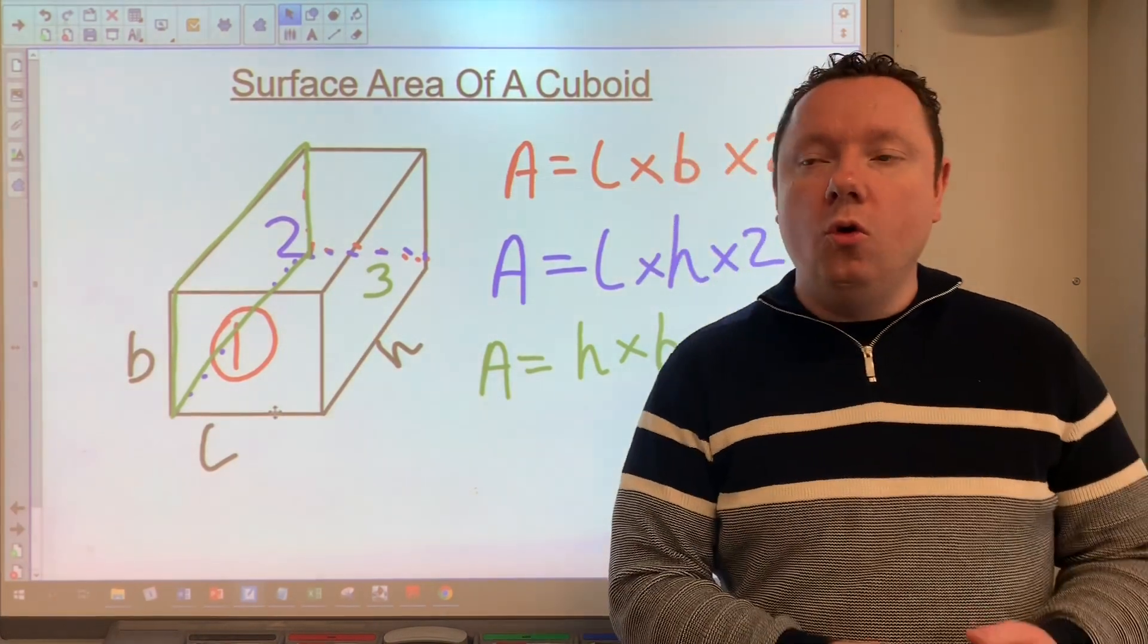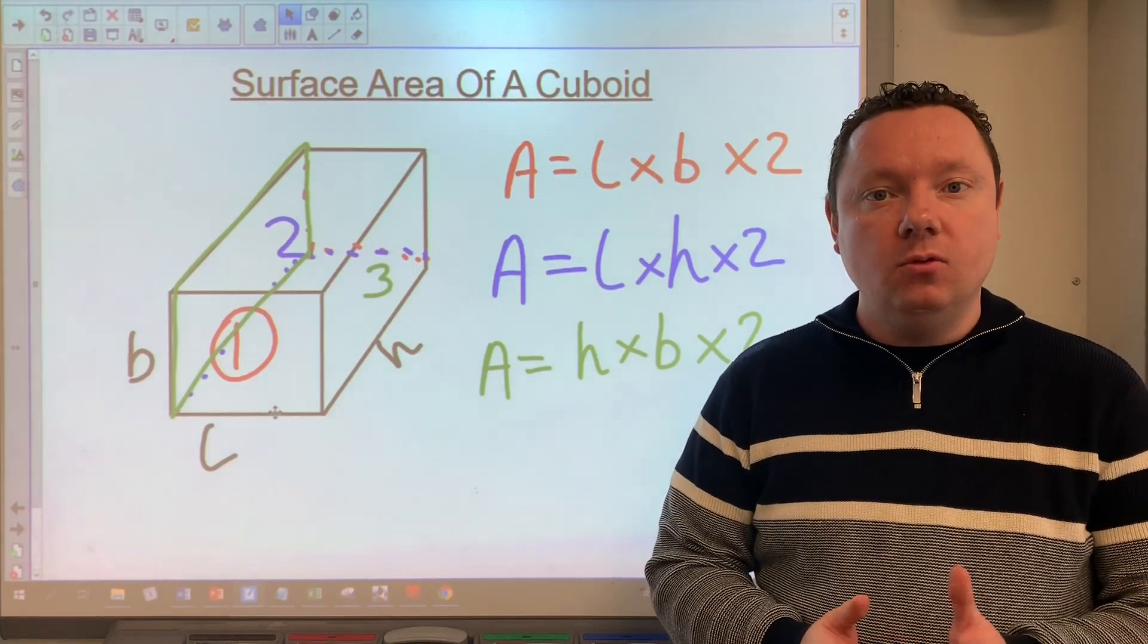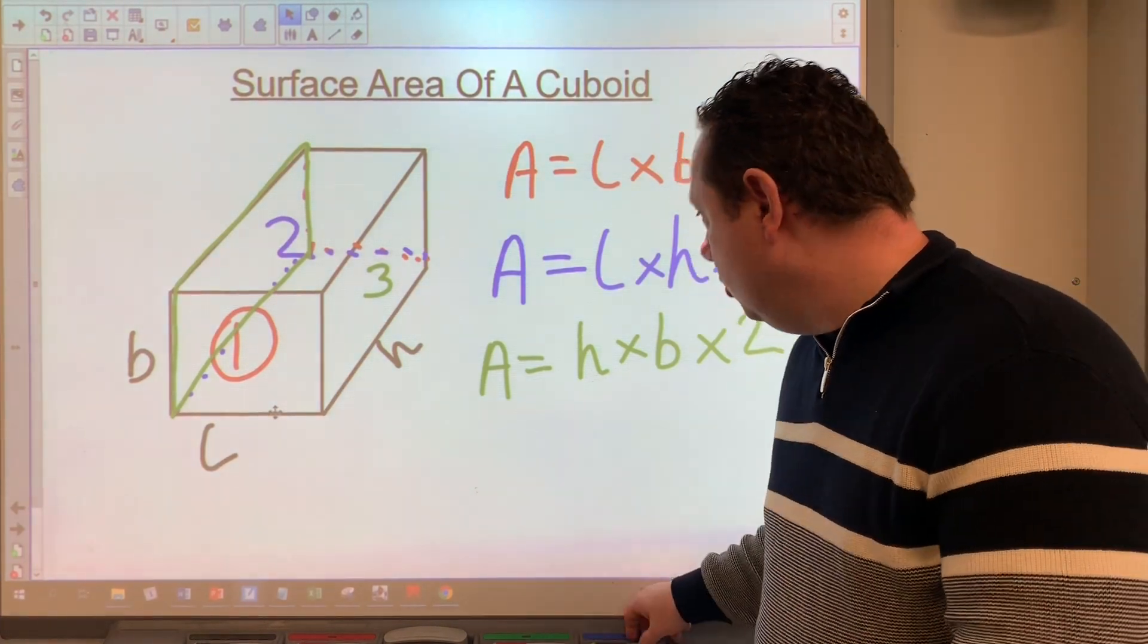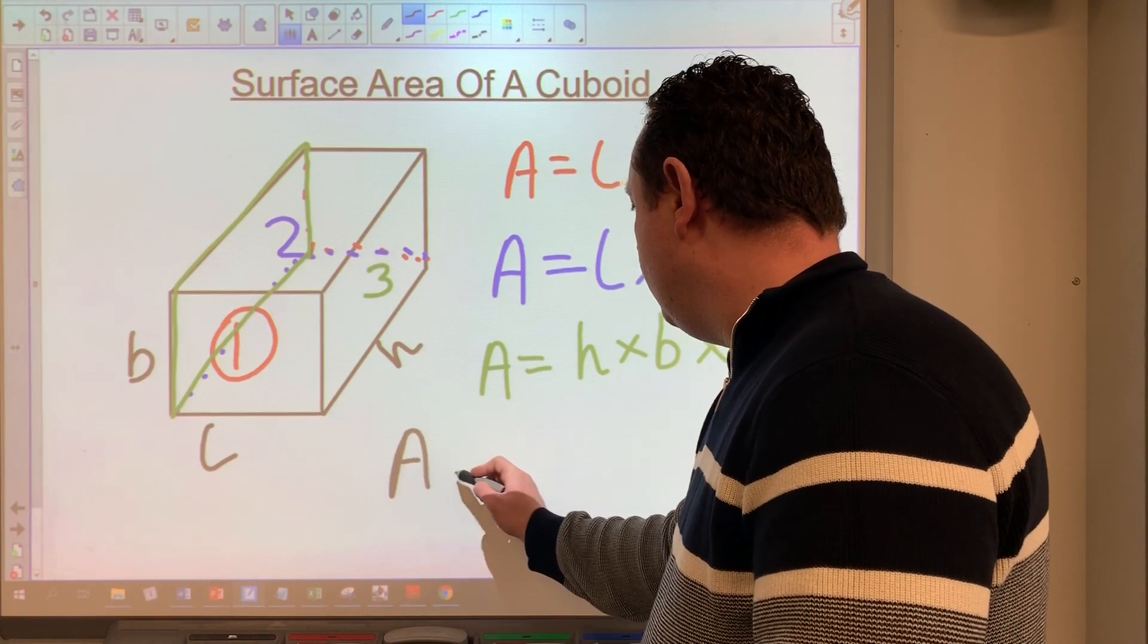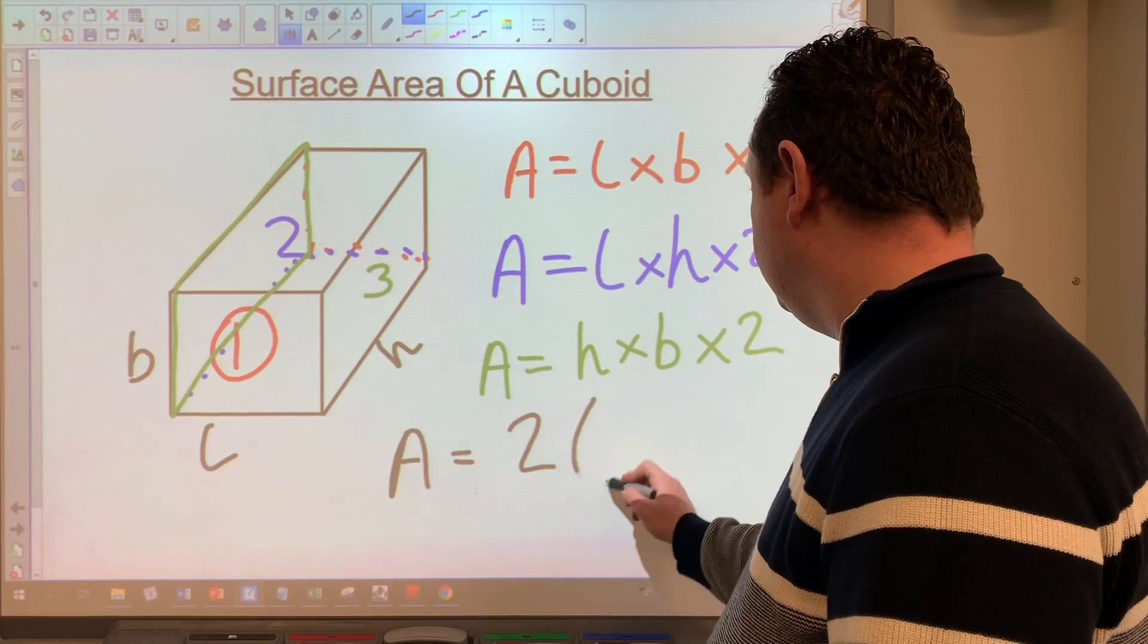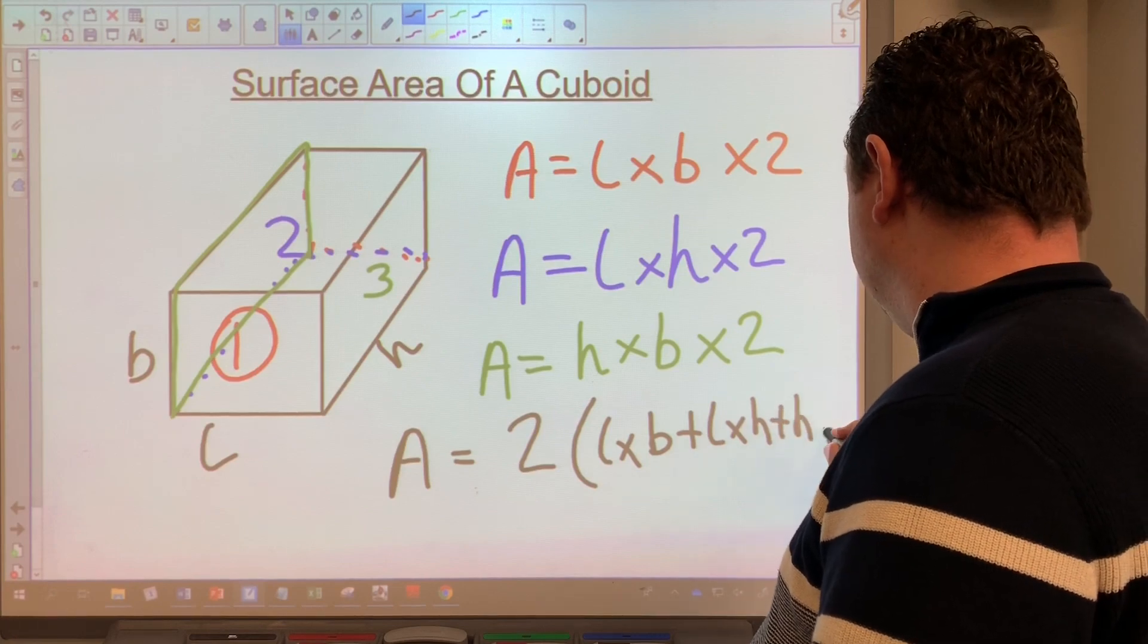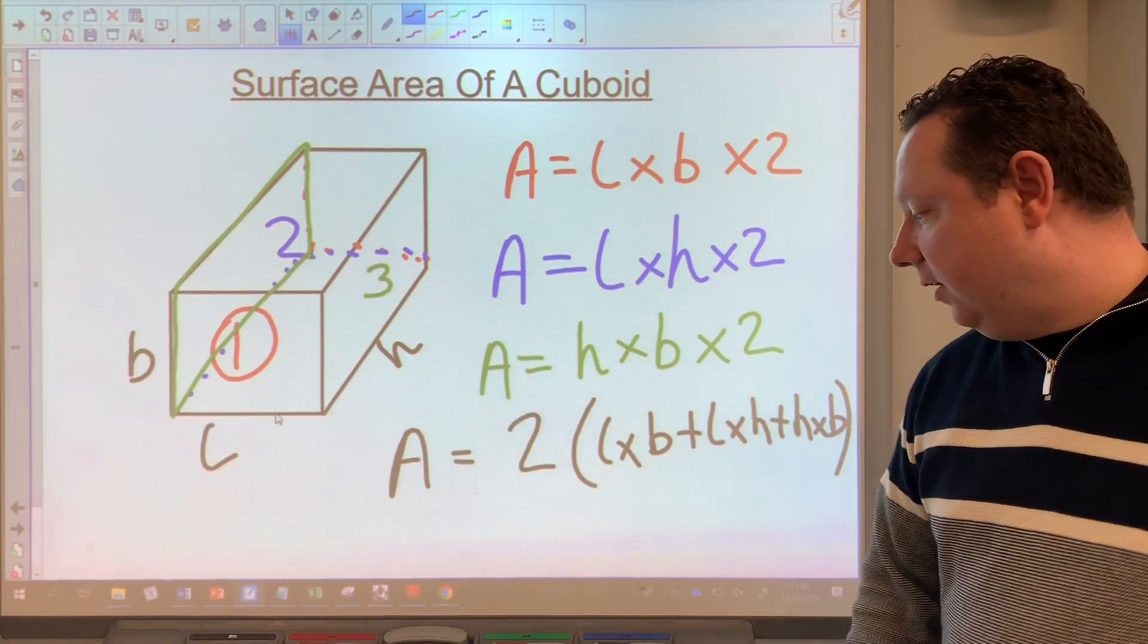Now if I want the total area, the surface area, I'm going to have to add up what I get from the results of all of these. Okay, so if we do that, your total area will be two times the length times the breadth plus the length times the height plus the height times the breadth. And that would be a formula for the surface area of a cuboid.